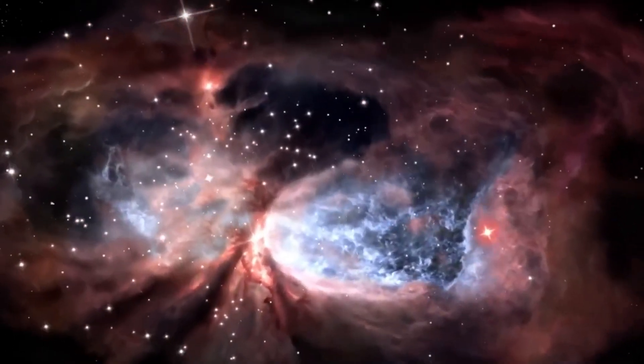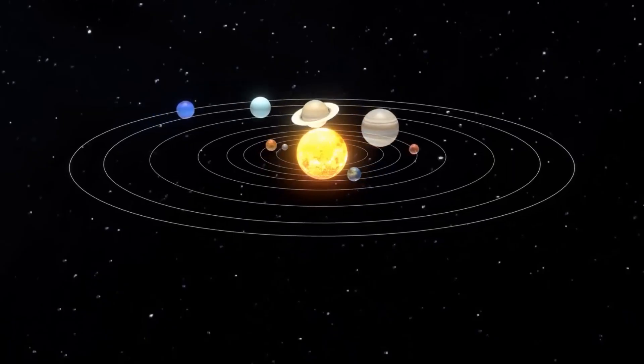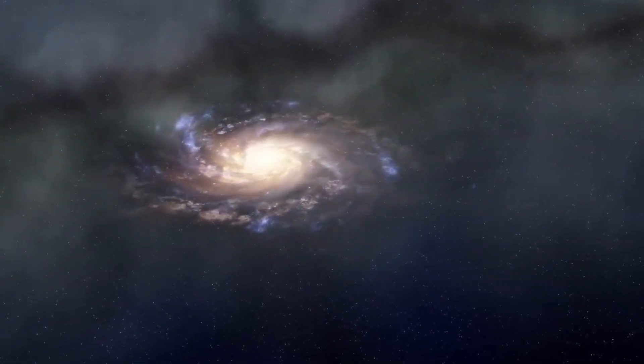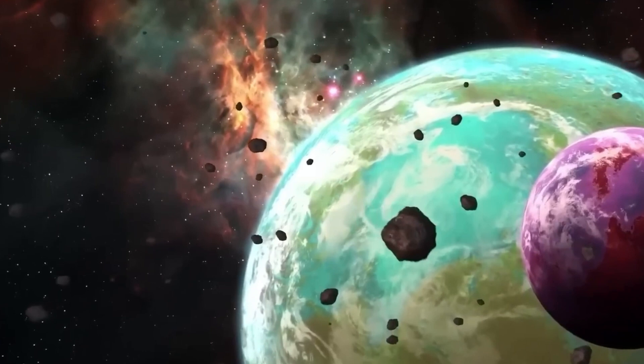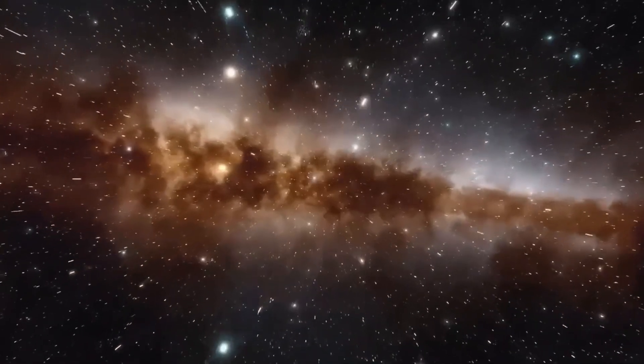It's also possible that the galaxies found with web data are something else. Considering that this is our first look back so far, it's crucial that we have an open mind regarding what we're observing. Even though the data suggests they are most likely galaxies, there is a chance that some of these objects are actually hidden supermassive black holes.